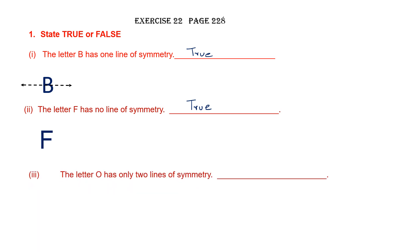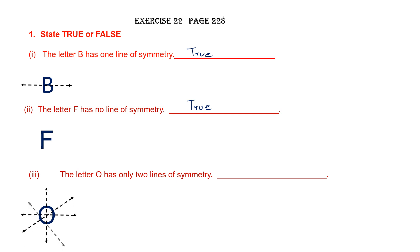Question 3: the letter O has only two lines of symmetry. Let's look at the letter O. I can draw one, two, three, four — I can draw an infinite number of lines of symmetry. So this statement, which says the letter O has only two lines of symmetry, is false.